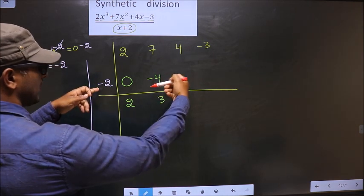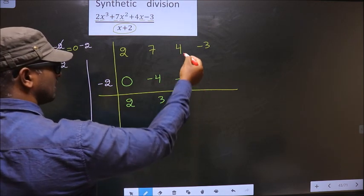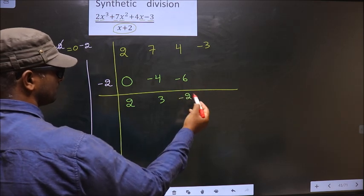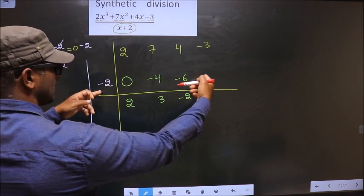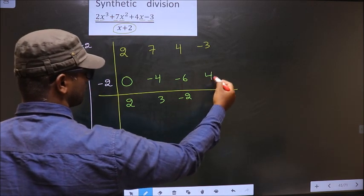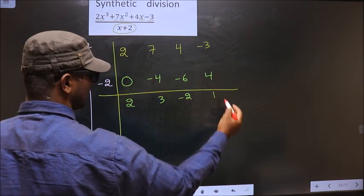Now multiply these 2 and write here. So minus 2 into 3 is minus 6. Now add these 2. You get minus 2. Now multiply these 2 and write here. Minus 2 into minus 2 is plus 4. Now add these 2. You get 1.